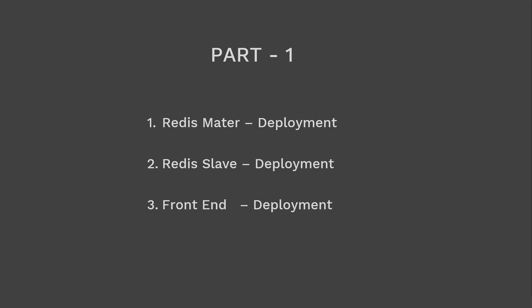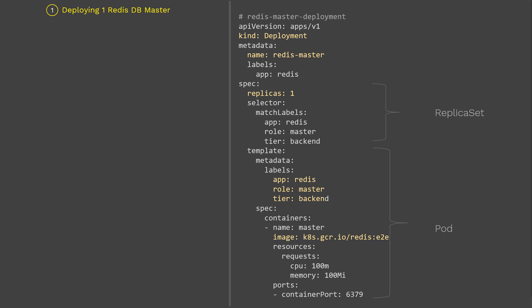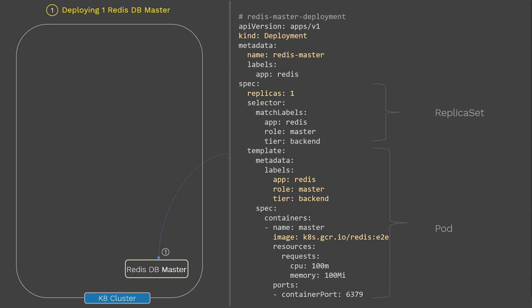Then we'll create the Redis slave deployment, and finally the front-end web app deployment. Starting with Redis master — here we are deploying the Redis DB master. I believe most of us are familiar with deployment config files; if not, please check the video about deployments linked in the description below. I'll highlight the key settings that require more focus. Once you run this deployment using kubectl create, the Redis DB master will be deployed onto the cluster.